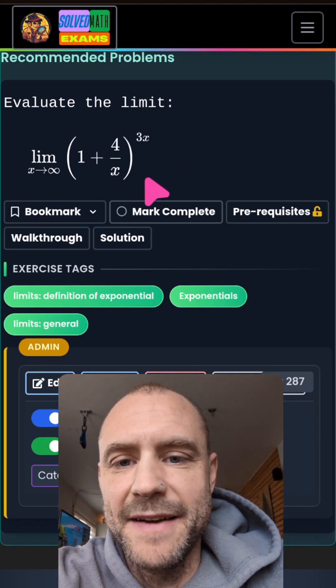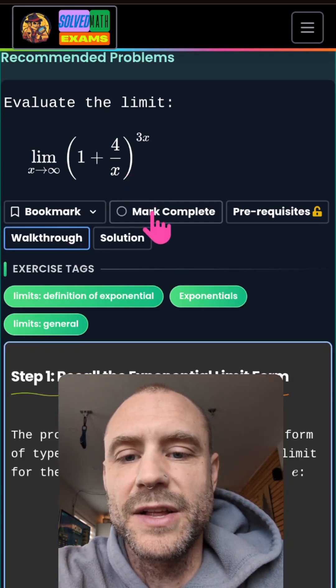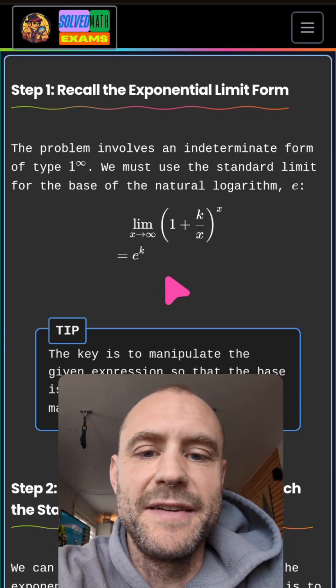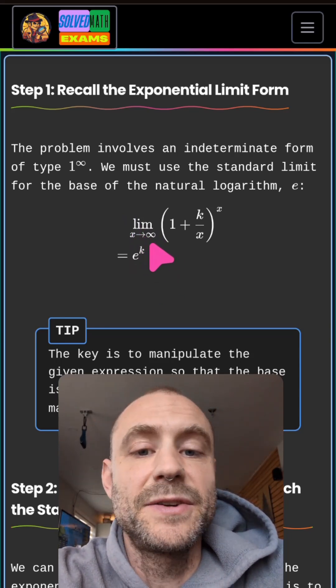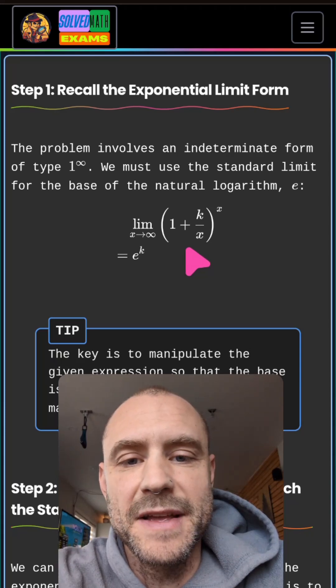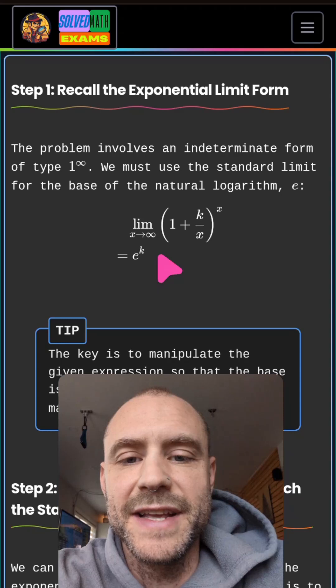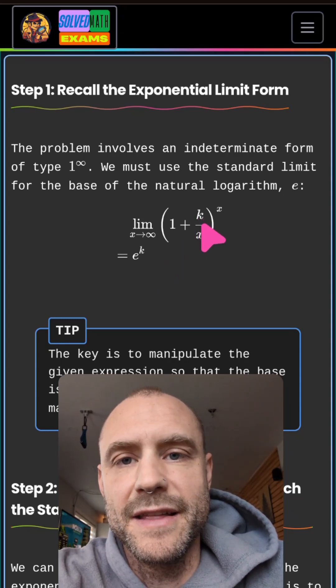So we have to recognize that this is actually the definition of the exponential. If we click walkthrough here, you'll see the definition of the exponential, the constant e. It's the limit as x goes to infinity of one plus k over x to the exponent x. That's the definition of e to the k. So if it was e to the 3, for example, then k would be 3 here.